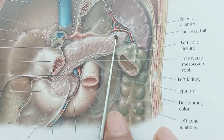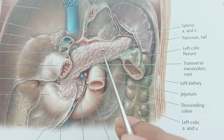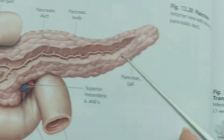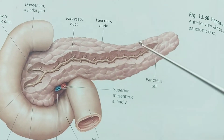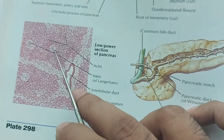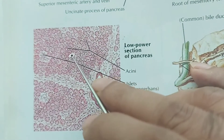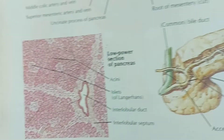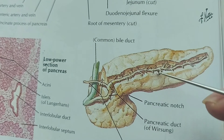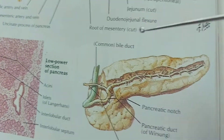The pancreas has both endocrine and exocrine functions. The endocrine part forms islets known as the islets of Langerhans — as seen in the histological picture. The exocrine part secretes enzymes, while the endocrine part secretes hormones.